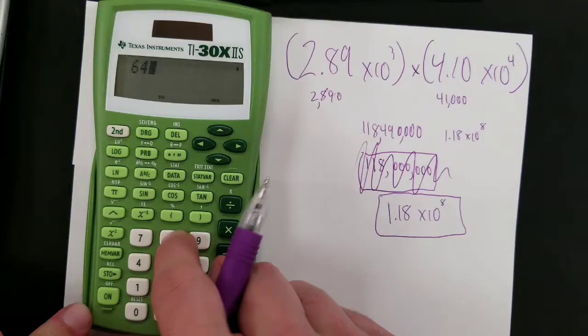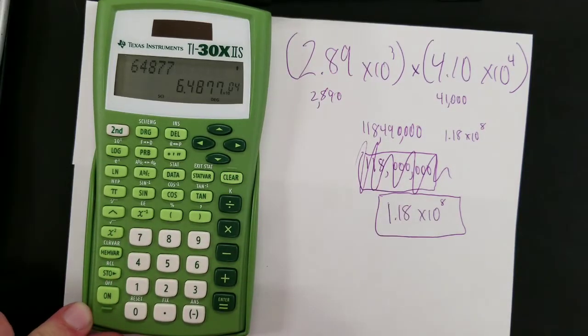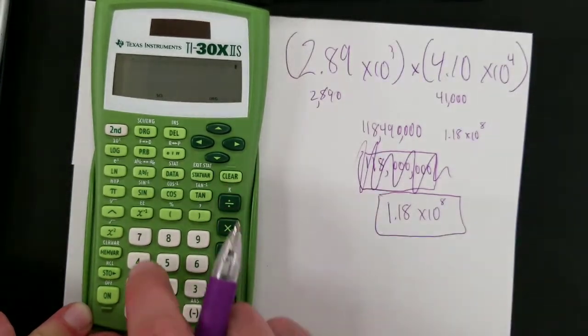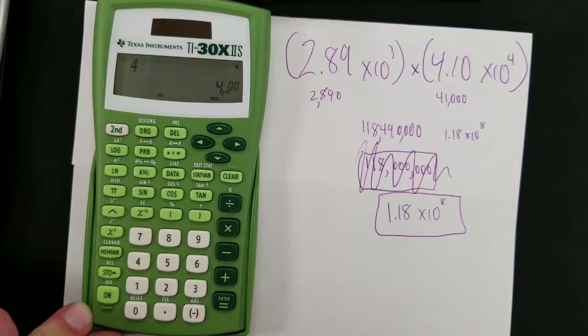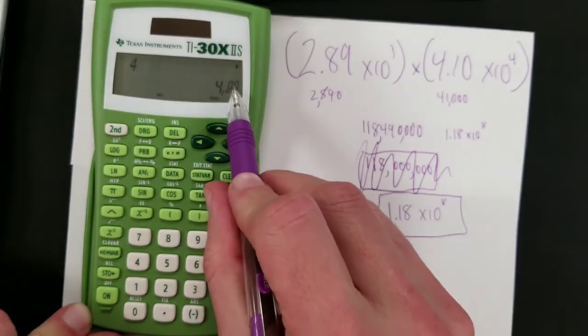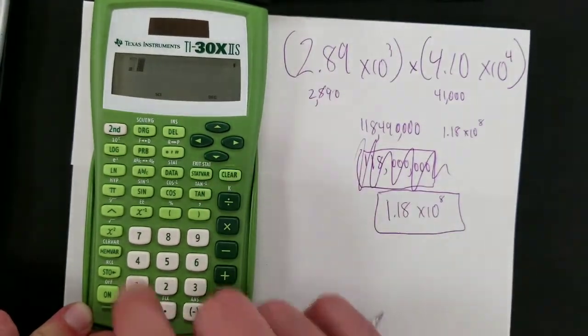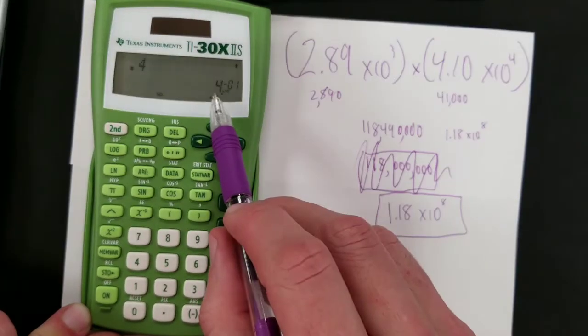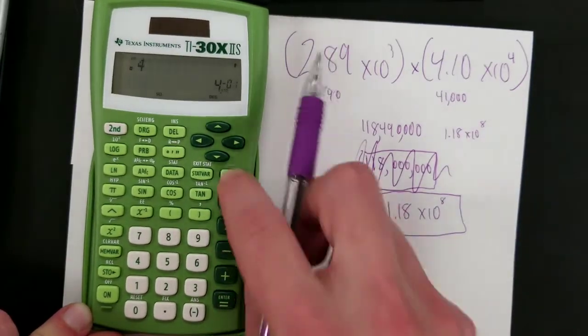Once in this mode, the calculator will give all output in the form of scientific notation. Even here, you can convert the number 4 to scientific notation. 4 times 10 to the 0th power. Or 0.4 is 4 times 10 to the negative 1st power.